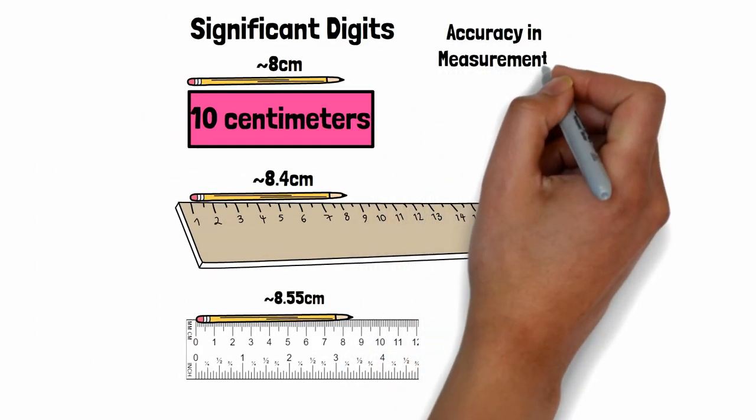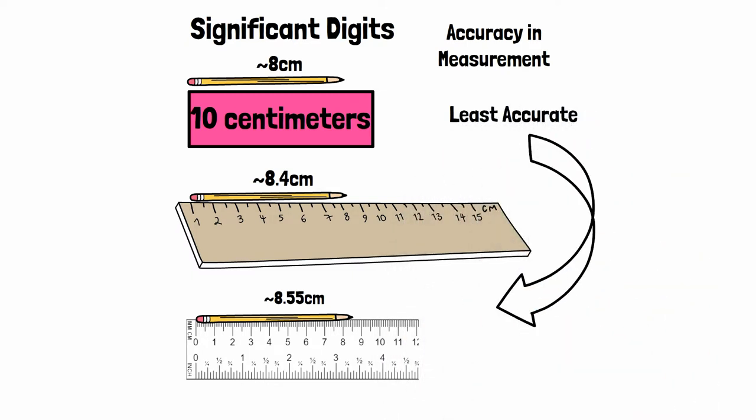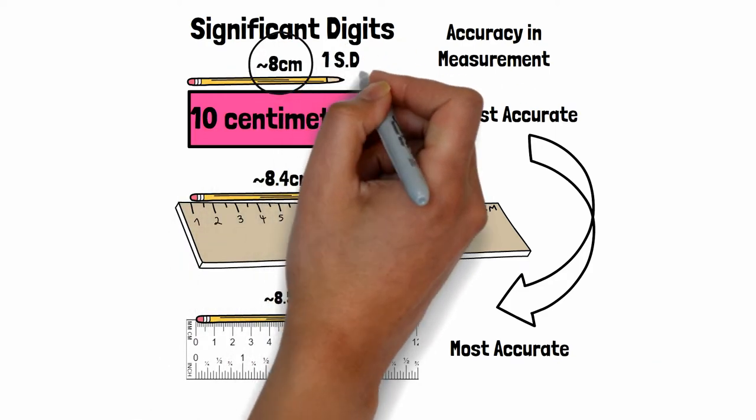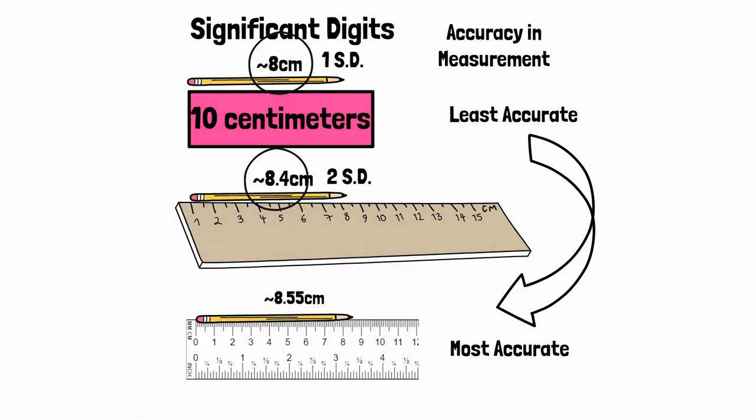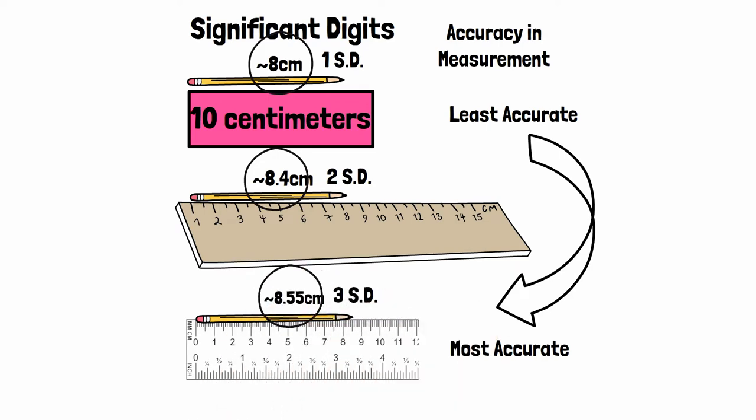The different rulers show us accuracy and measurements from least accurate to most accurate. We can also see accuracy with the number of digits in our measurements. The least accurate has only one digit, then two, and finally the most accurate has three digits. Significant digits show accuracy.